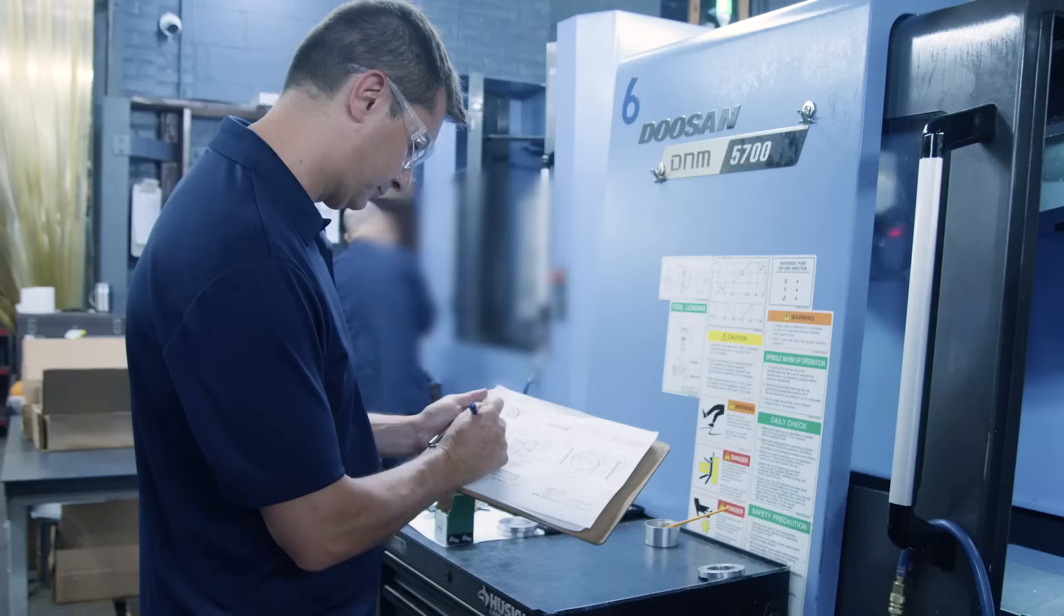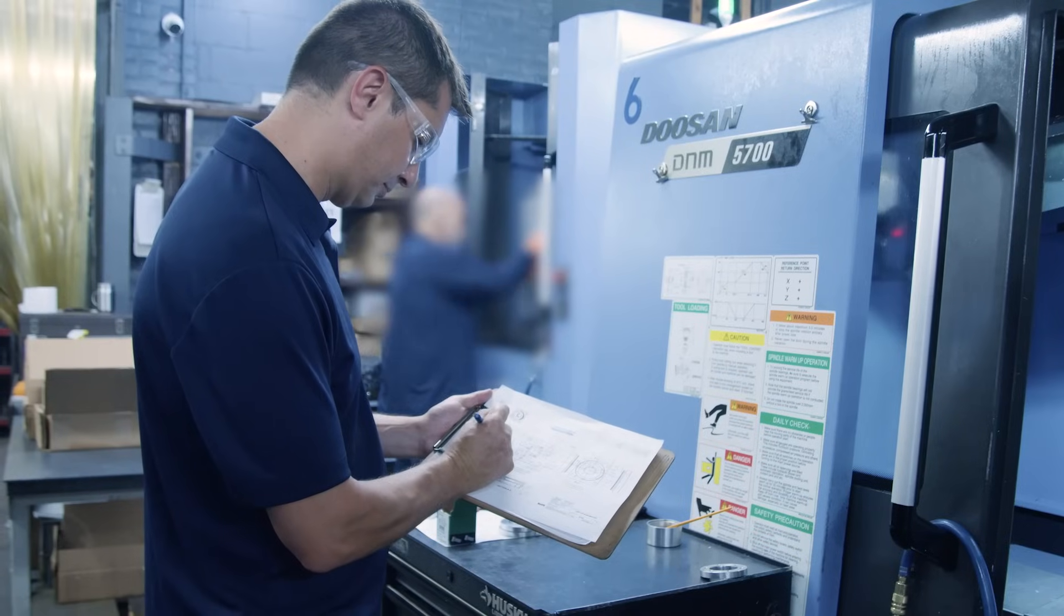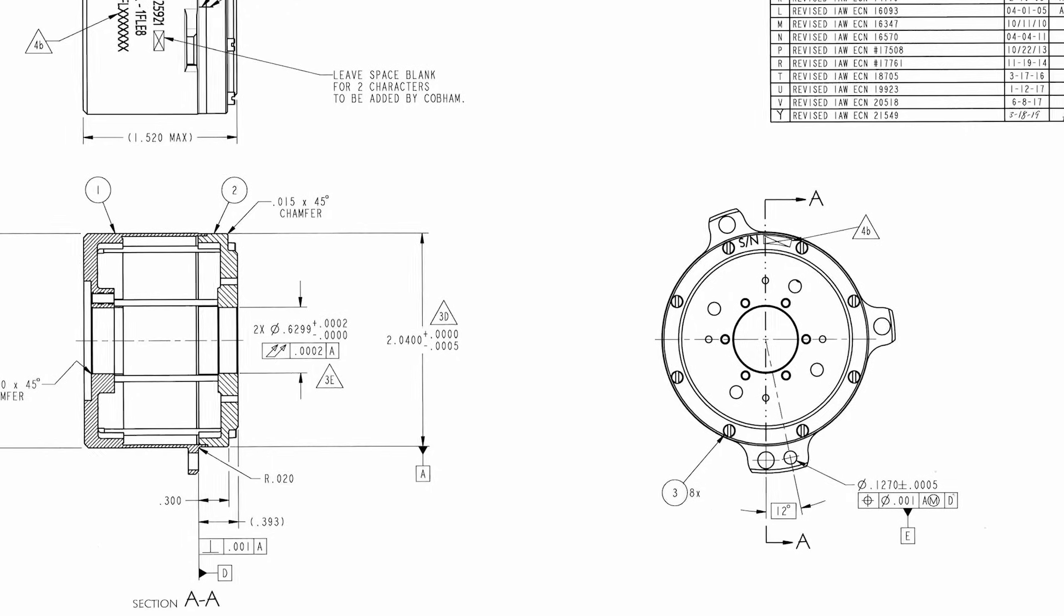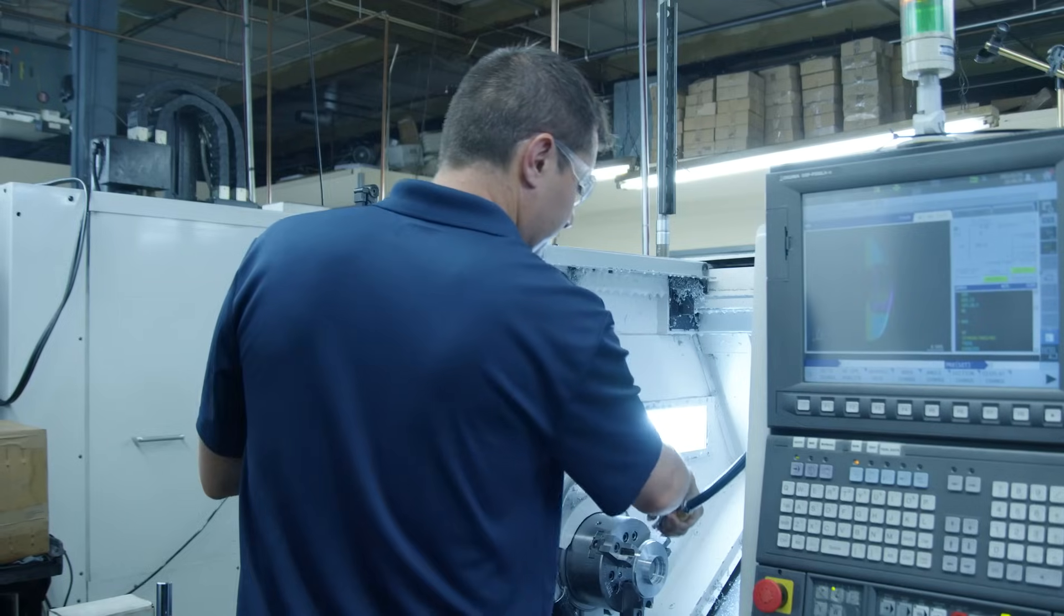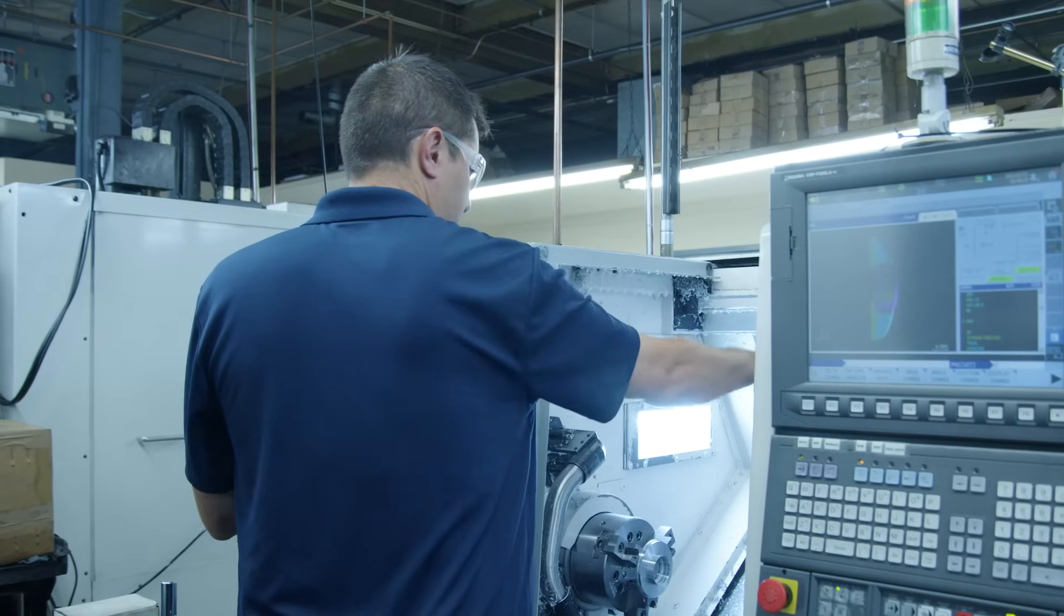When we're given the blueprint from our customer, what we're going to see is dimensions and holes and surfaces that we need to machine. The way the engineers will describe what they're looking for is by using GD&T, Geometric Dimensioning and Tolerancing.